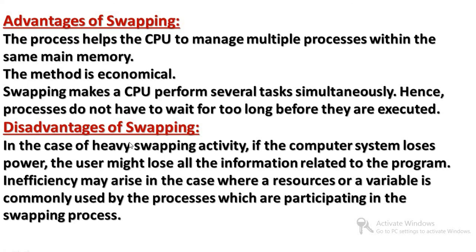So to summarize: swapping involves temporarily moving inactive programs or processes from main memory to secondary memory — that is swap out. When the process needs CPU execution again, it is swapped back into the main memory — that is swap in. It is a simple concept. I hope you are clear. We will see the next video. Subscribe to the channel. Thank you.